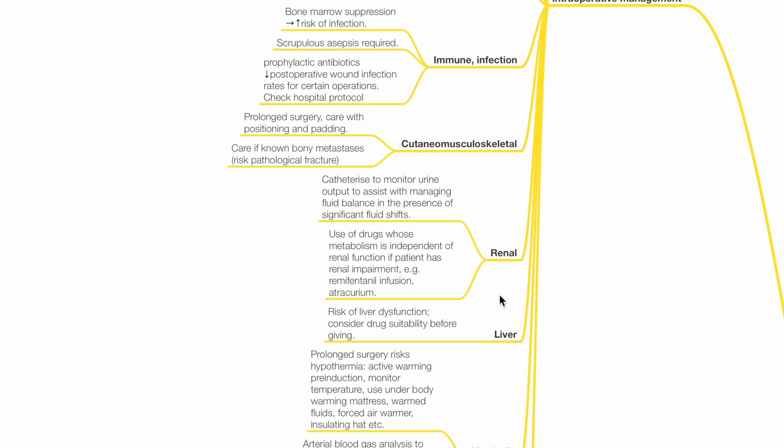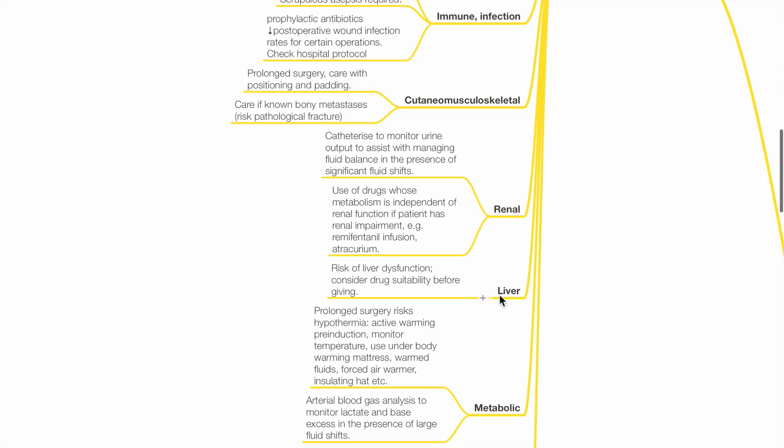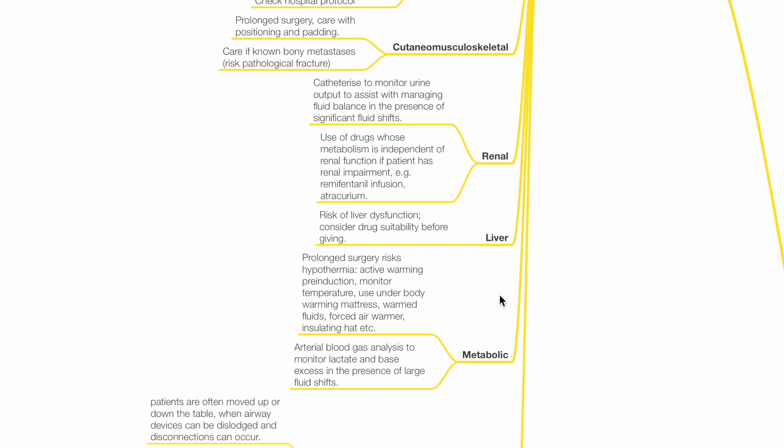Cutaneous musculoskeletal. Prolonged surgery requires care with positioning and padding to avoid pressure injuries. Care if known bony metastasis to avoid pathological fractures. Renal. Catheterize to monitor urine output to assist with managing fluid balance in the presence of large fluid shifts. Use of drugs whose metabolism is independent of renal function is beneficial, such as remifentanil and atracurium.